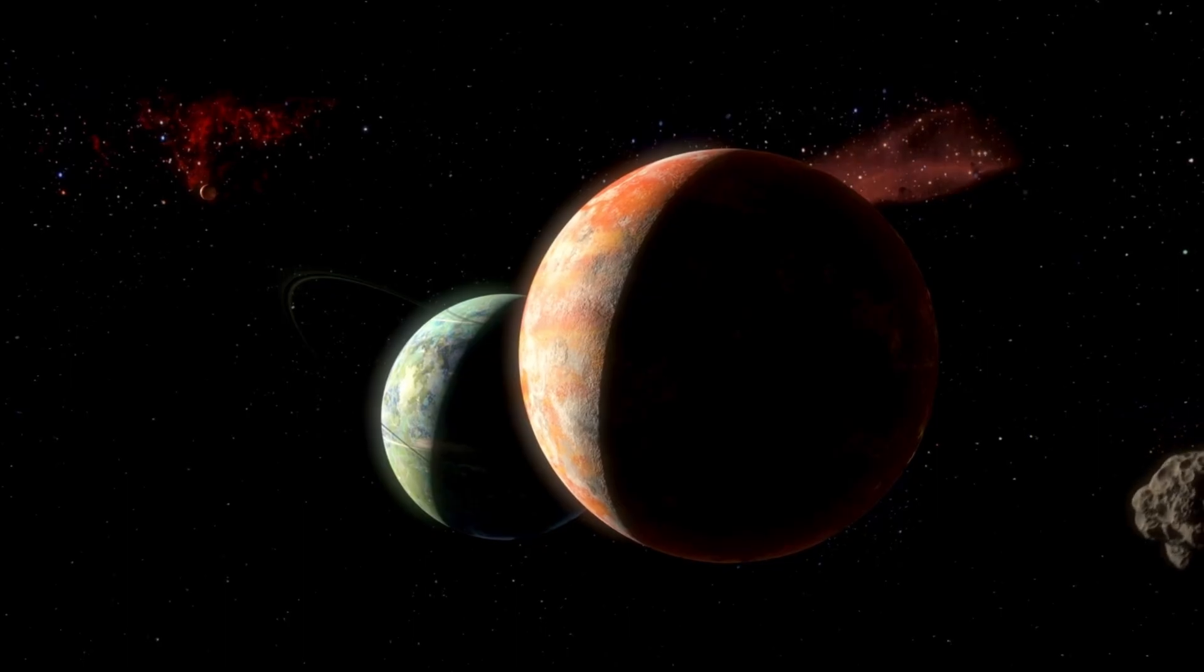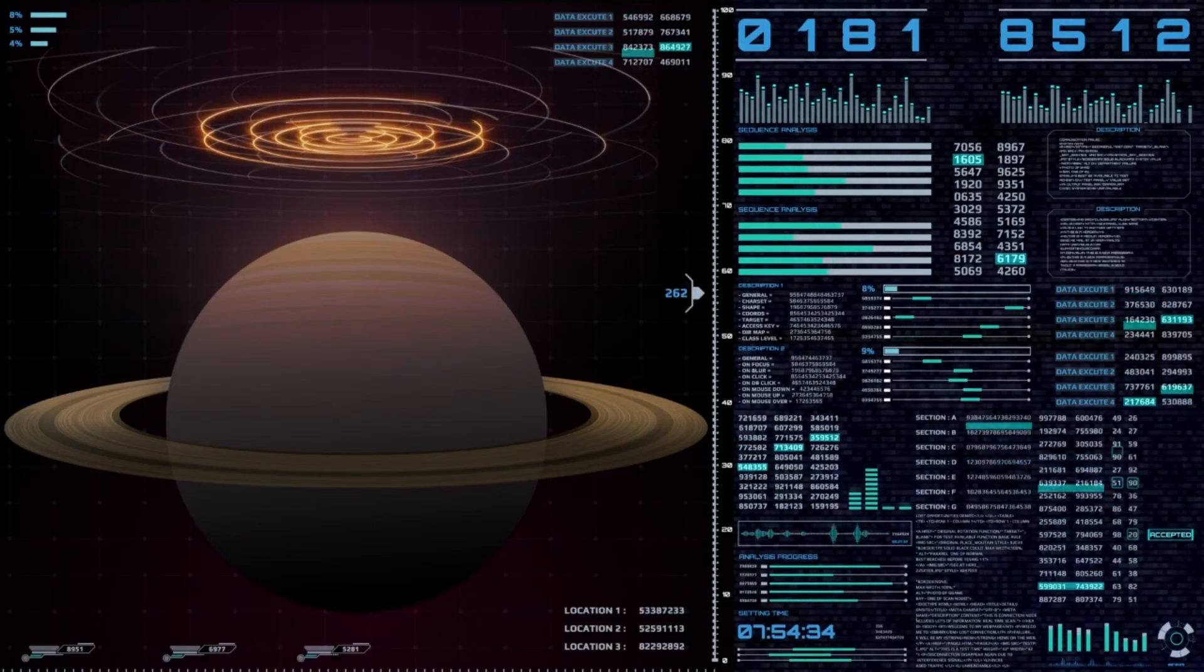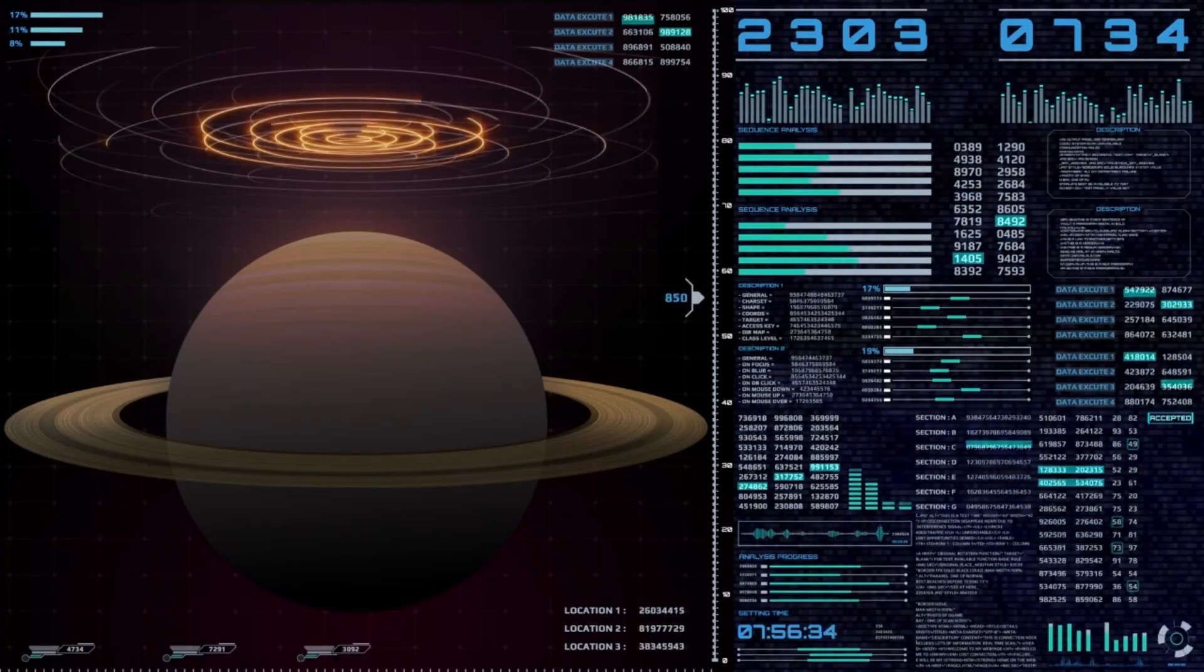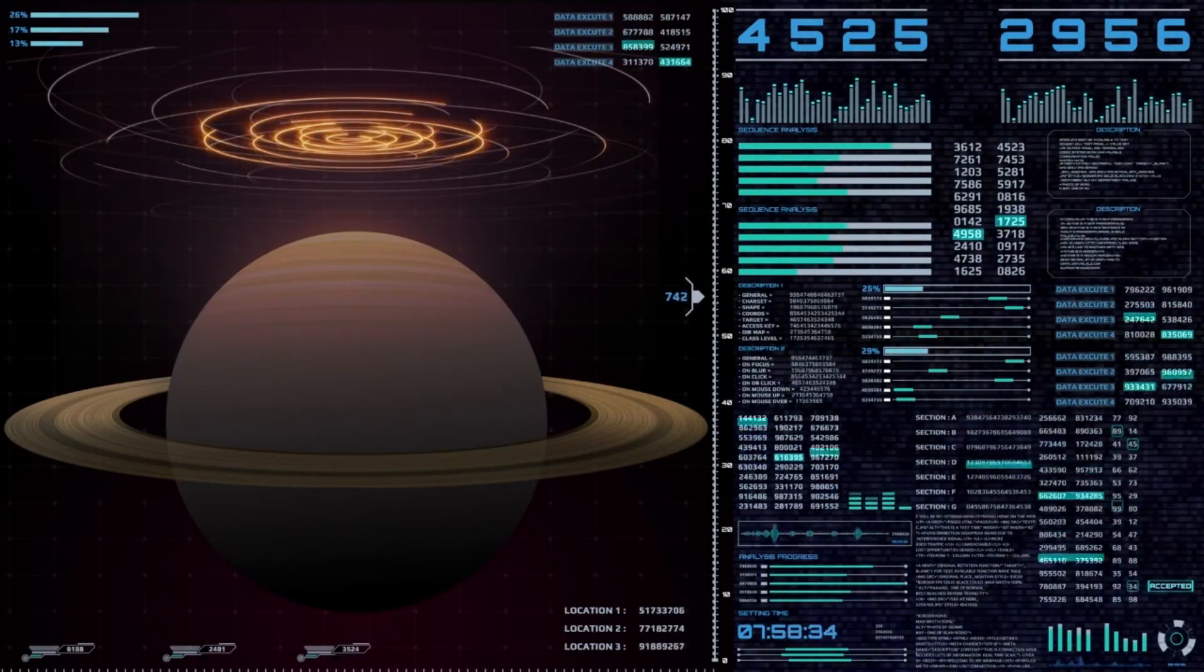Until now, it was just numbers on a page: mass, distance, orbital speed, speculative atmospheric models. But today, for the first time, it's an actual image.